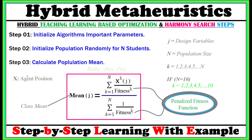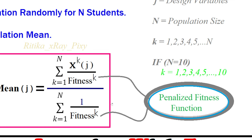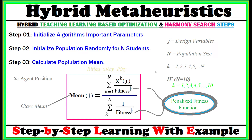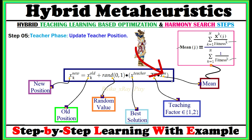In step 3, we calculate the population mean — that is the class mean — using this equation. Here x denotes the agent position or student position, j is the total number of design variables, and N is the population size. For example, if we have 10 students, N equals 10. Using this equation we calculate the population mean, and we will use this value in the teacher phase to update the position.